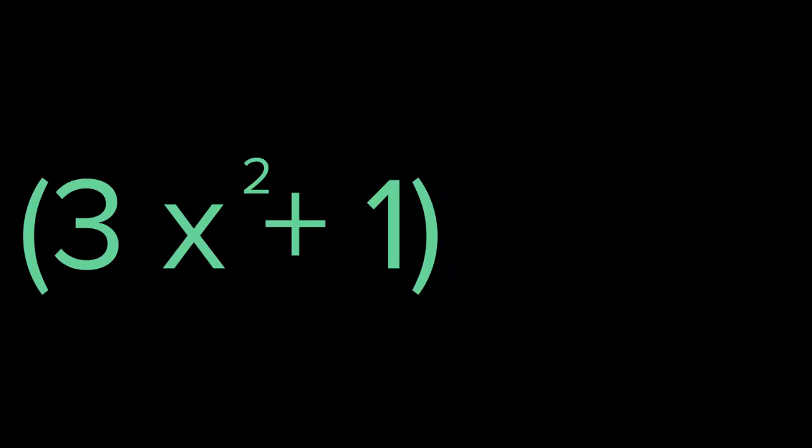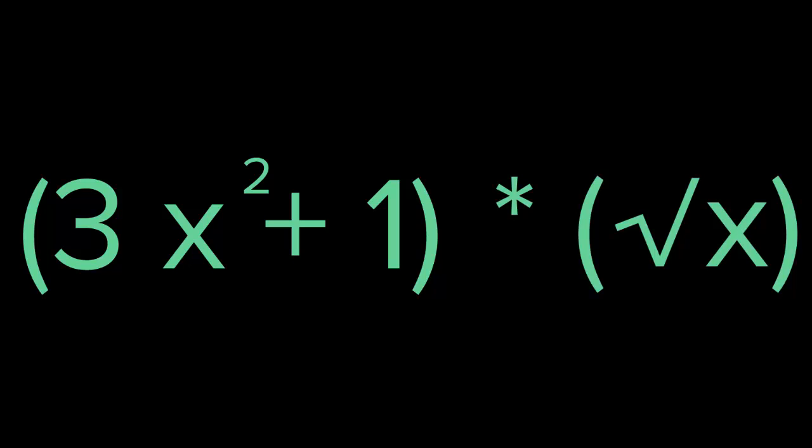This lesson is about the product rule — how do we find the derivative of two functions being multiplied by each other? So far we have done a constant times a variable, a variable having a power, and a variable plus another function or constant. We know how to do all these derivatives. But what happens when we have two functions multiplied by each other, just like here? We have 3x squared plus 1 times square root of x. How do we find the derivative?